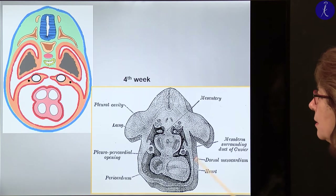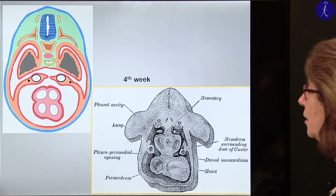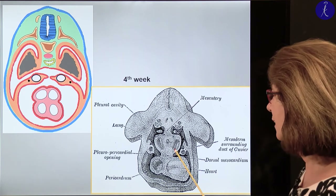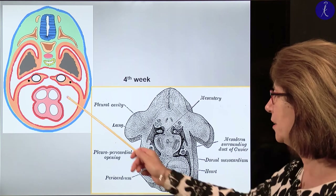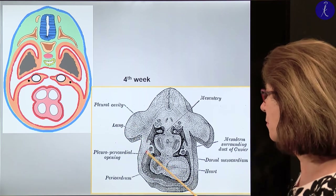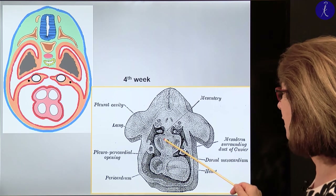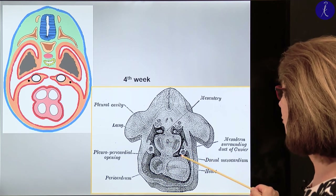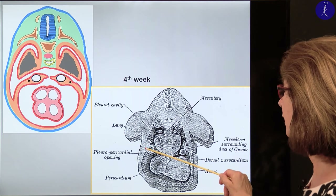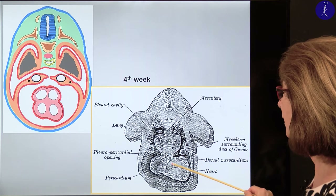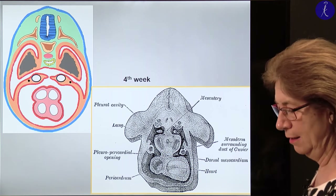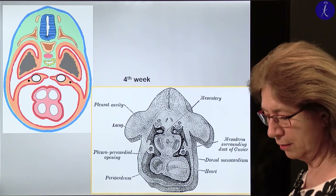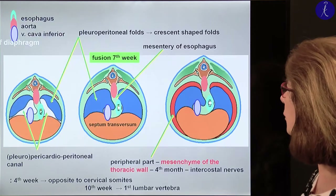This is the final position, which you may understand from the developmental history. And this is a nice old picture about the development of the body cavities — as you see, it shows the same information: here you see the lungs, the pleuropericardial plate, and the heart.